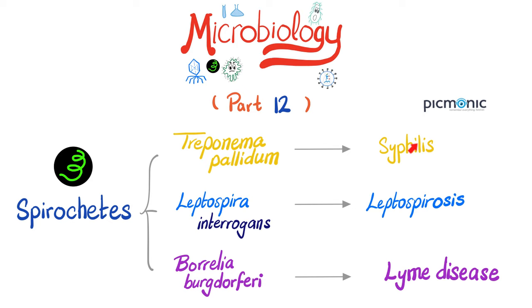Leptospirosis has two phases: the first is the septicemic phase, and then when your antibodies develop you have an immune phase. This disease is caused by Leptospira interrogans. Borrelia burgdorferi causes Lyme disease, which also has three stages: early Lyme disease, early disseminated Lyme disease, and late disseminated — or simply late — Lyme disease.